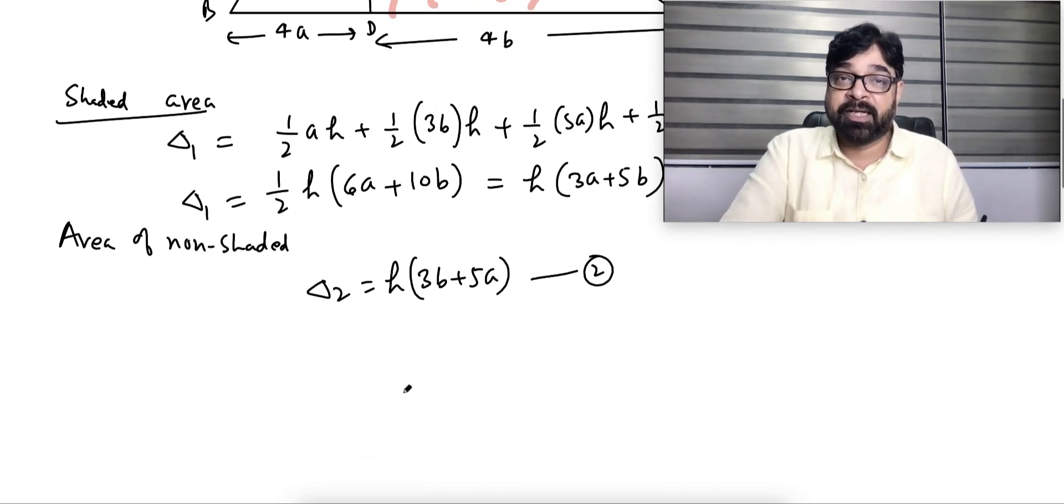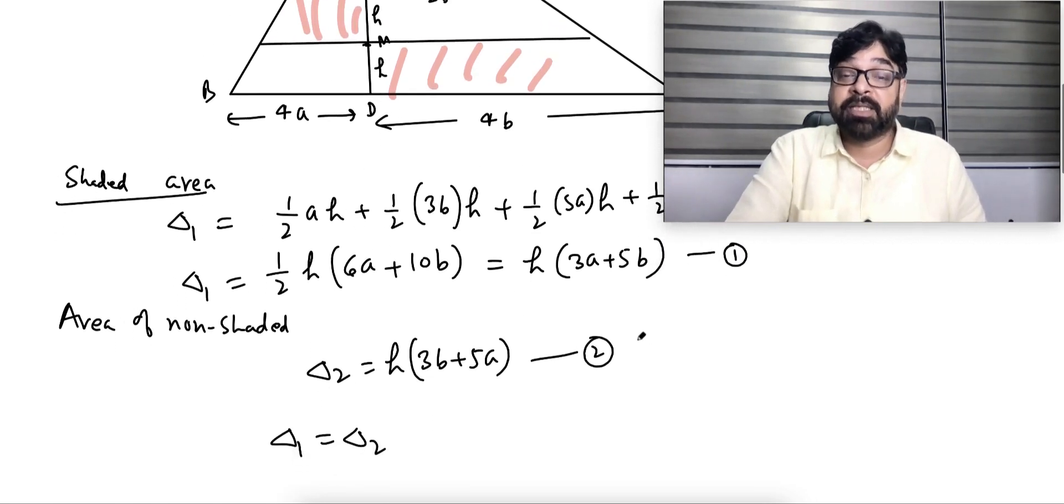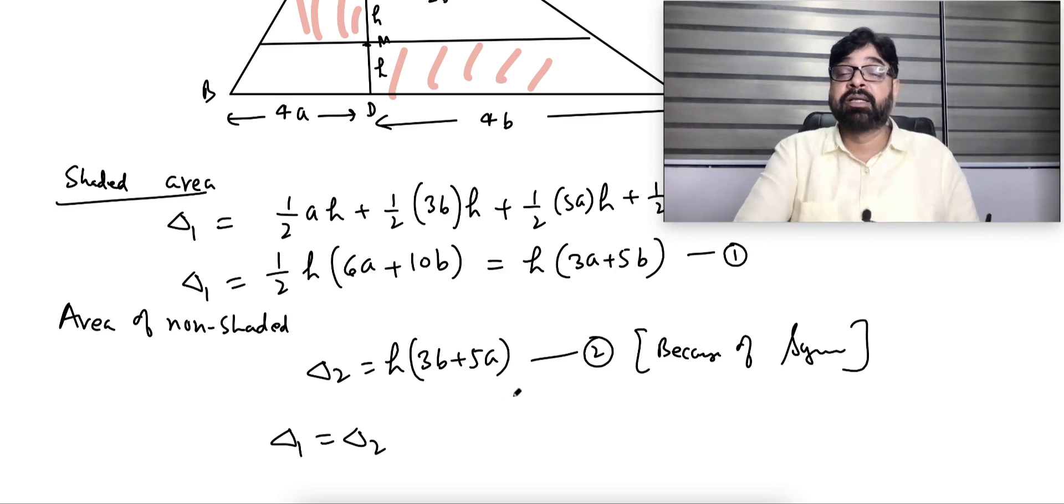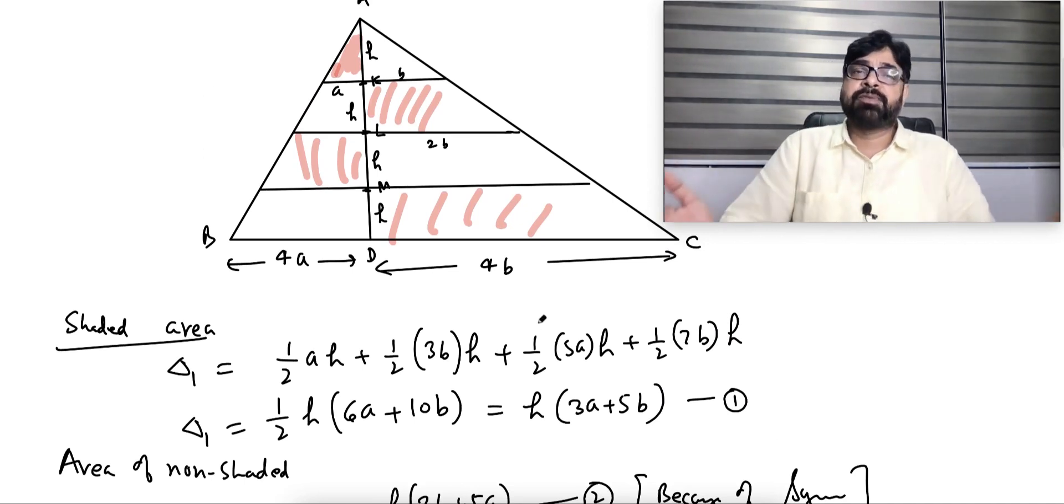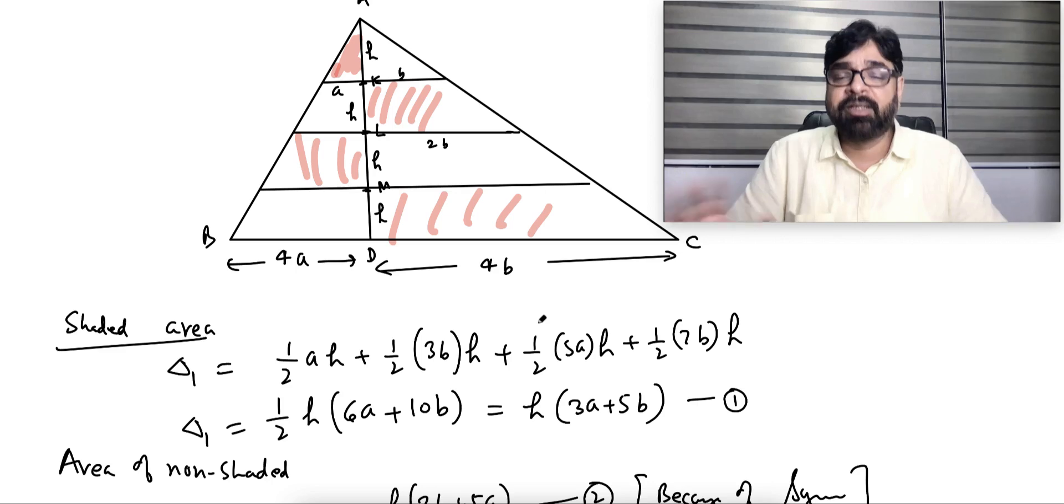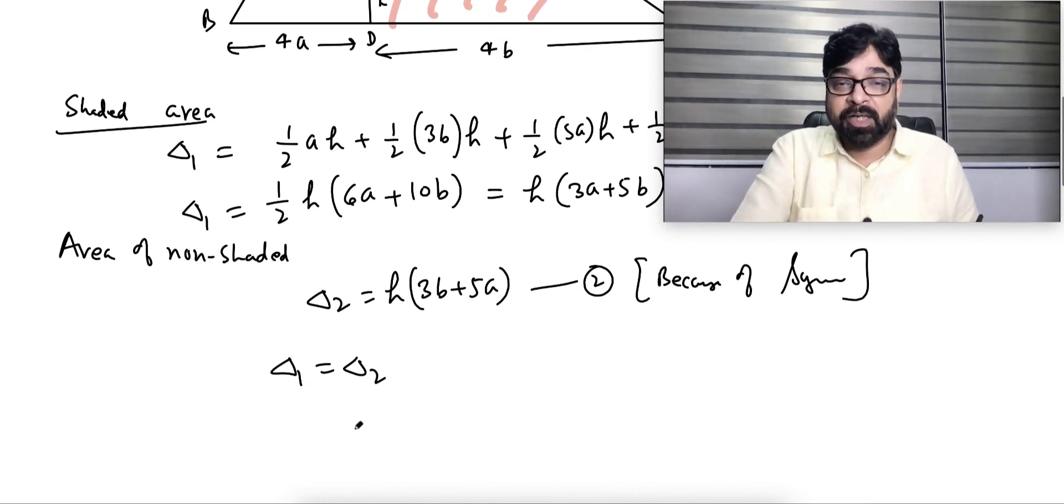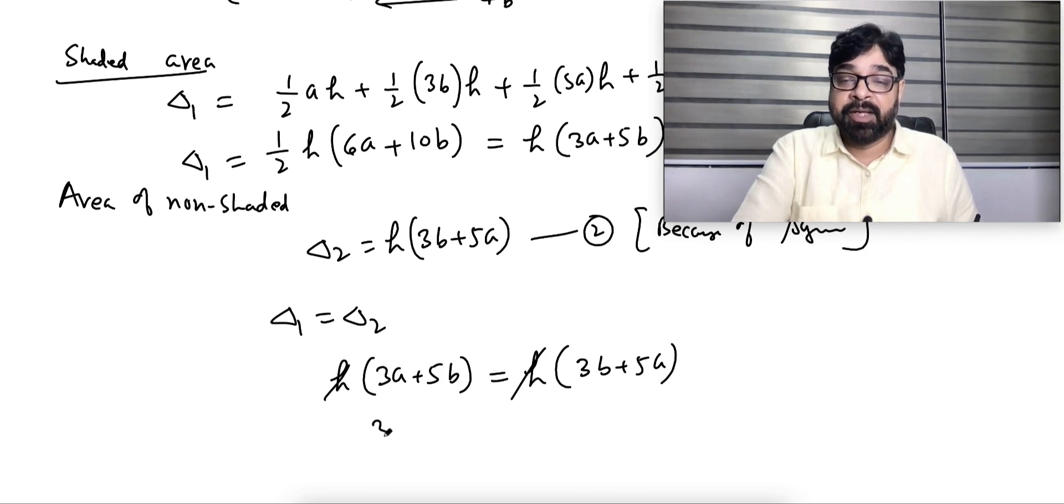They are saying sum of the area of the shaded and non-shaded are equal. Delta 1 equals delta 2. Because of symmetricity and trapezium area, you should mention that. So delta 1 equals delta 2, that means h into 3a plus 5b equals h into 3b plus 5a. h cancels, and 3a minus 3a minus 5a gives minus 2a, and 5b minus 3b gives 2b.